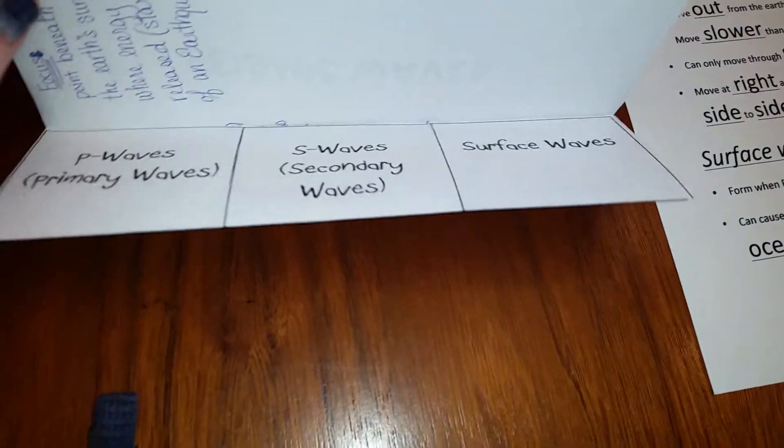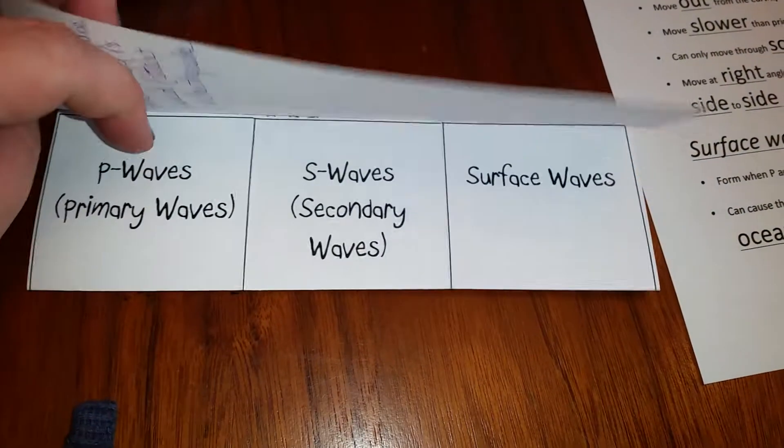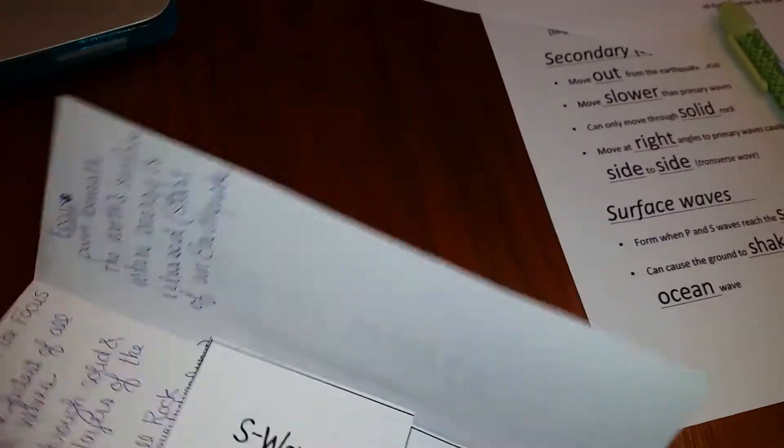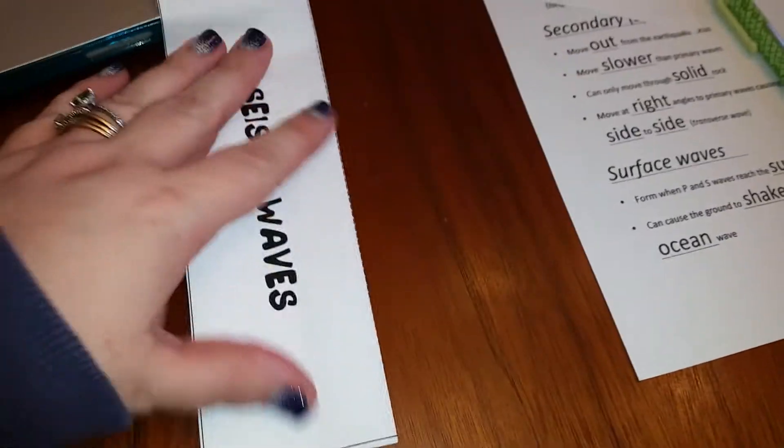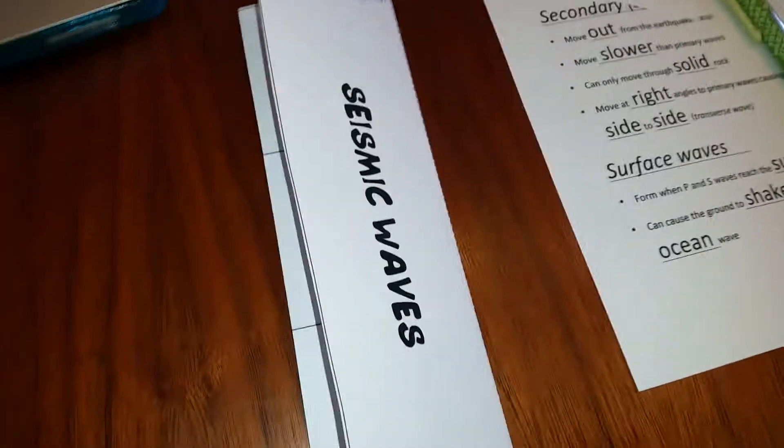You're going to make this foldable—it's one of the best ways to remember the differences between P waves, S waves, and surface waves. And then you're going to glue it into your notebook so that you have it to study throughout the unit. You're going to be using these notes which I've already put on canvas within this assignment.